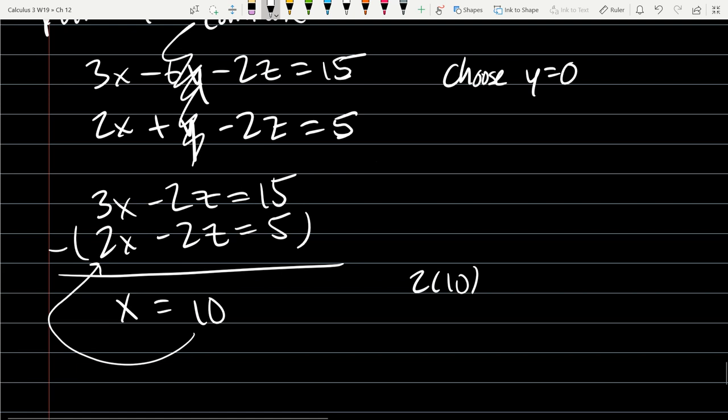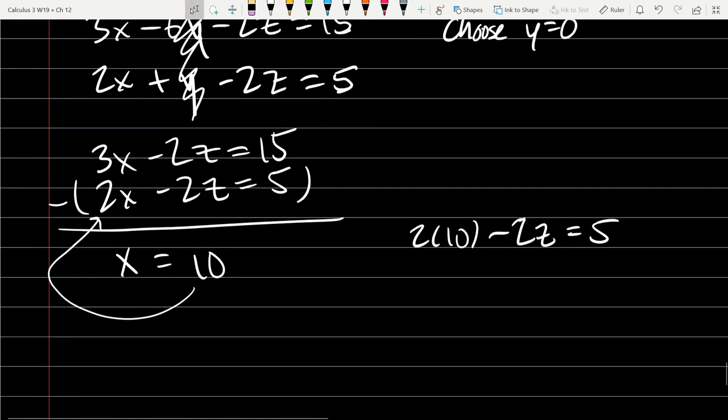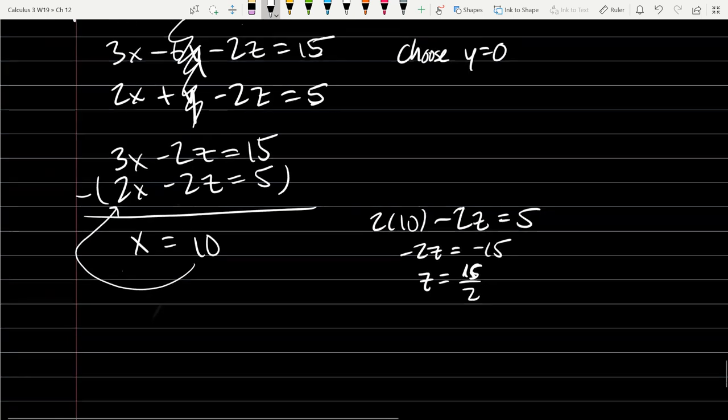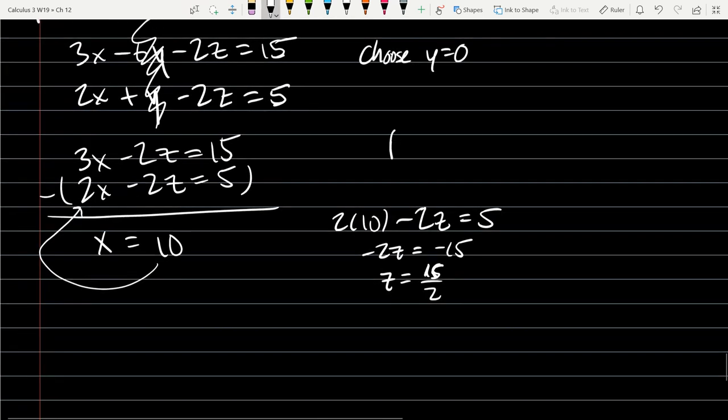We've got 2 times 10 minus 2z equals 5. Let's solve for z. 20, 5 minus 20 is -15. So z equals 15 over 2. We're writing all these together. P-naught: 10 for x, y is 0.